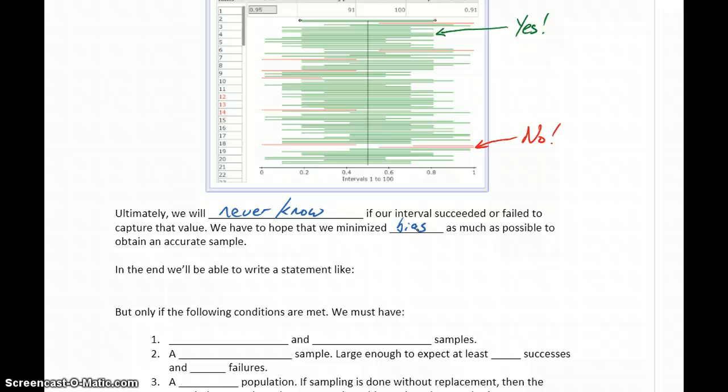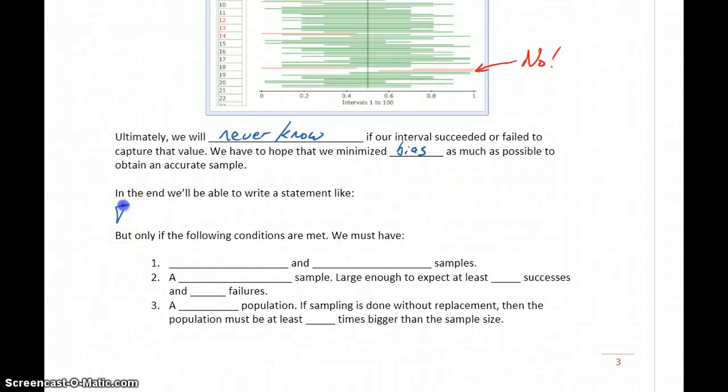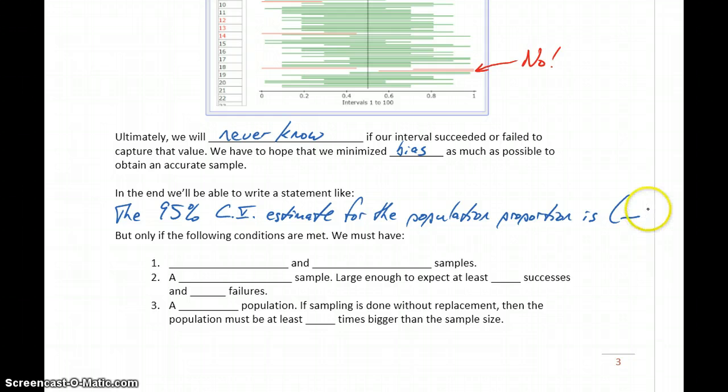In the end, we'll be able to write a statement like this: The 95% confidence interval estimate for the population proportion is, and then in parentheses, whatever that minimum value is for our interval up to our maximum value. So in the end, this is all that we'll really get to state.